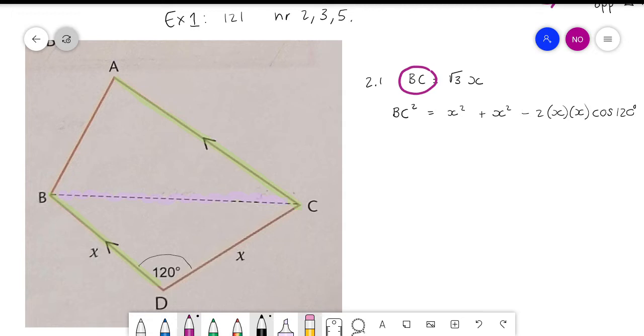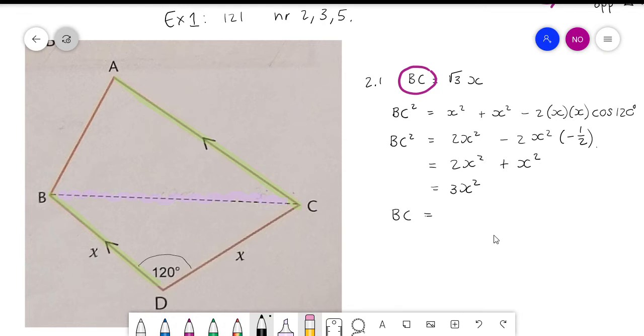So I'm going to say BC squared is equal to 2x squared. Then 2x squared, and what is the cos of 120? It's negative one-half. So we have this one, then a negative times a negative becomes a positive, two times a half is one, so do you guys agree that simplifies to just x squared positive x squared, which leaves us with 3x squared? So then if I'm looking for BC, I'm going to put a square root over both sides, so BC equals root 3x.